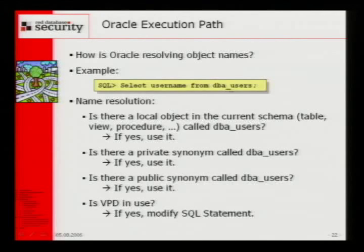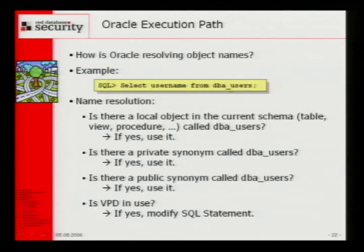Before hiding database users, we must check how Oracle does name resolution. The normal command is select username from DBA_USERS. Oracle checks first: is there a local object in the current schema called DBA_USERS? If yes, use it. Normally there isn't. Then it looks for a private synonym — also normally not there. Then it looks for a public synonym, and normally there is a public synonym DBA_USERS. Finally, before execution, Oracle checks if there's a Virtual Private Database rule, which can modify the statement.